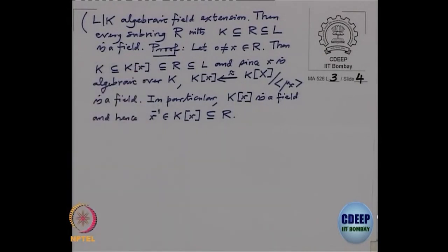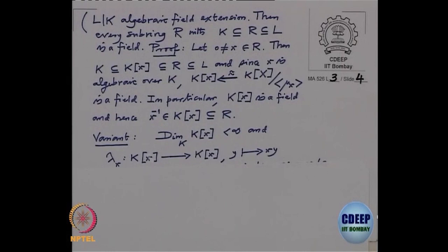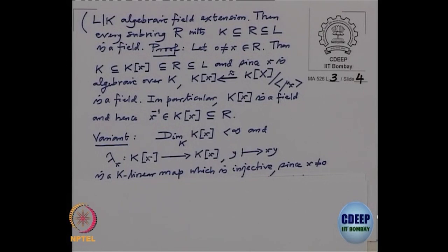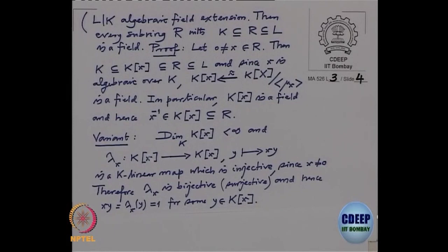Here is a slightly simpler variant. Look at the subalgebra K[x] generated by x. Because x is algebraic, this subalgebra is finite-dimensional over K. Consider the multiplication map by x on K[x], sending y to x times y. This is a K-linear map which is injective since x is nonzero. A K-linear injective map on a finite-dimensional vector space must be bijective, hence surjective. So 1 is in the image: there exists y such that xy = 1, meaning y is the inverse of x.